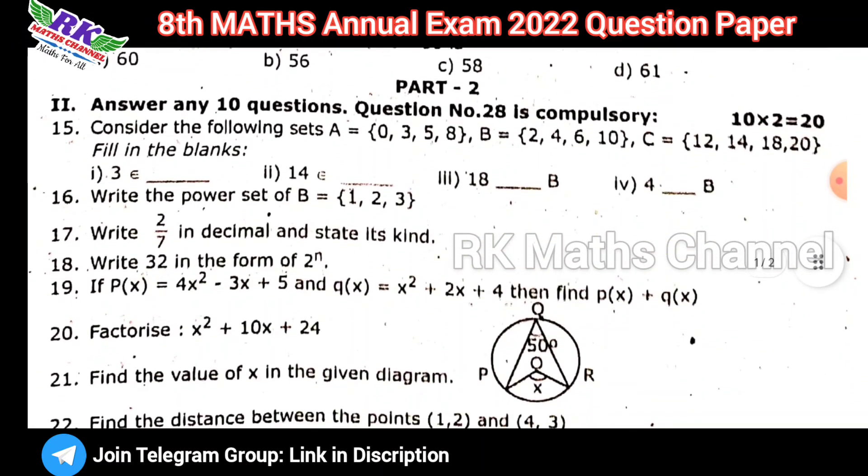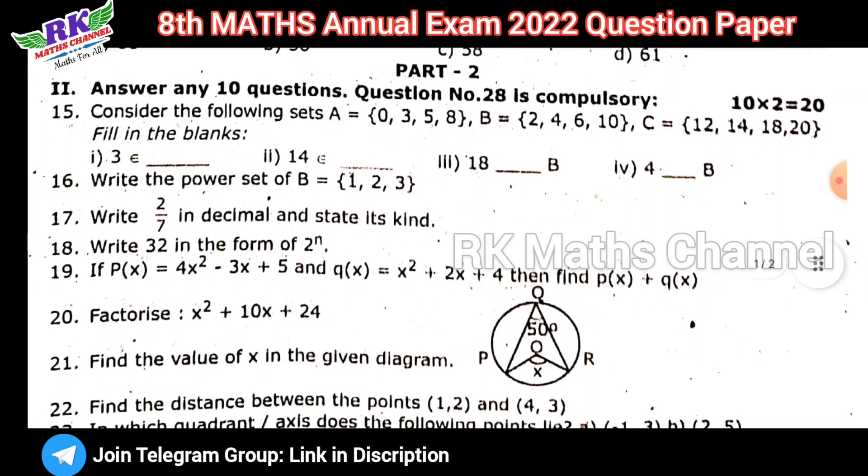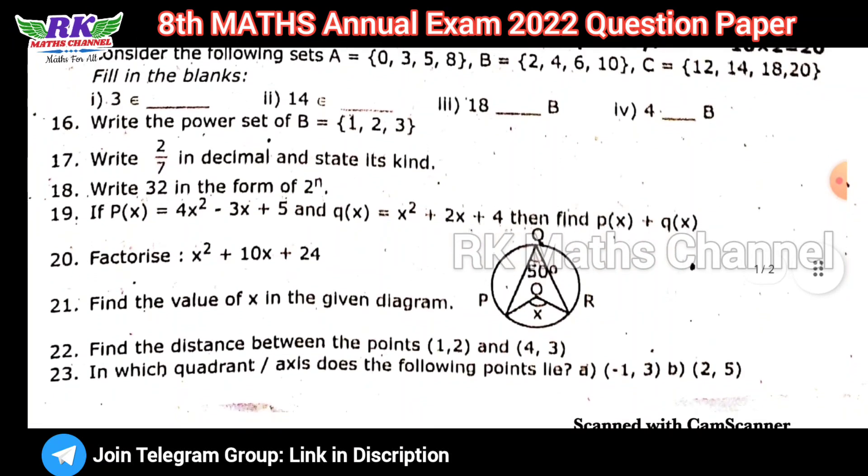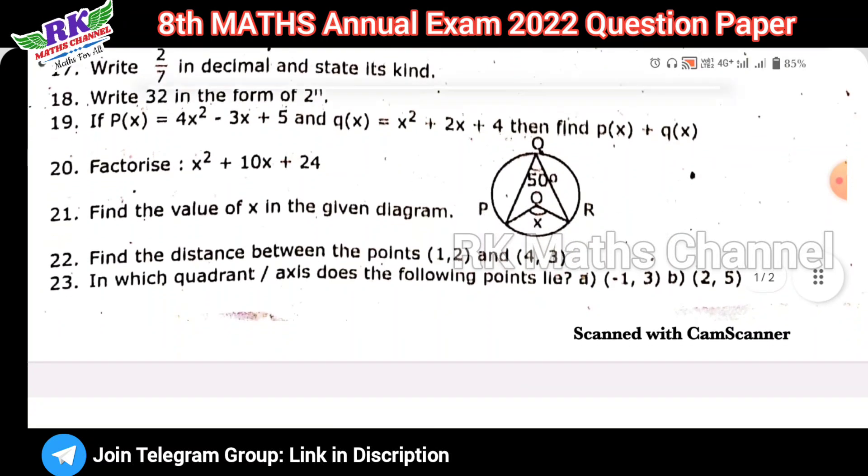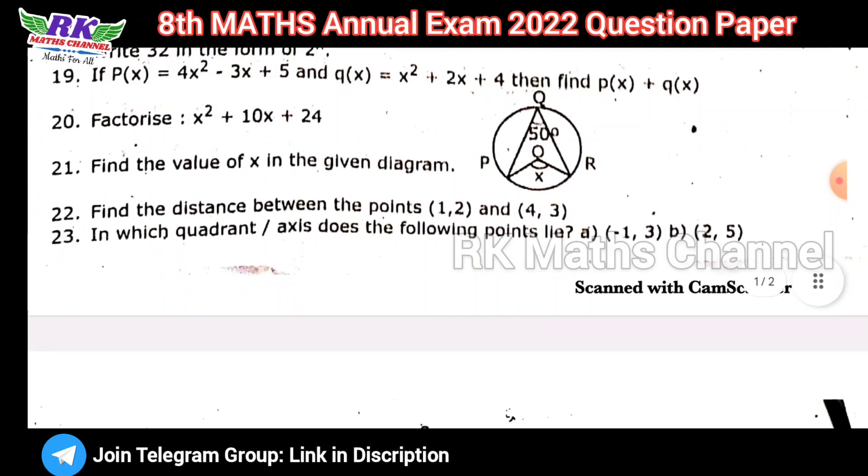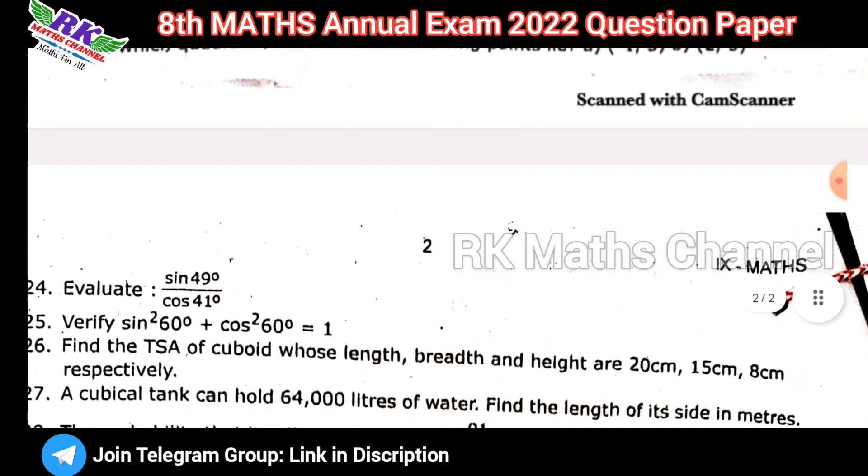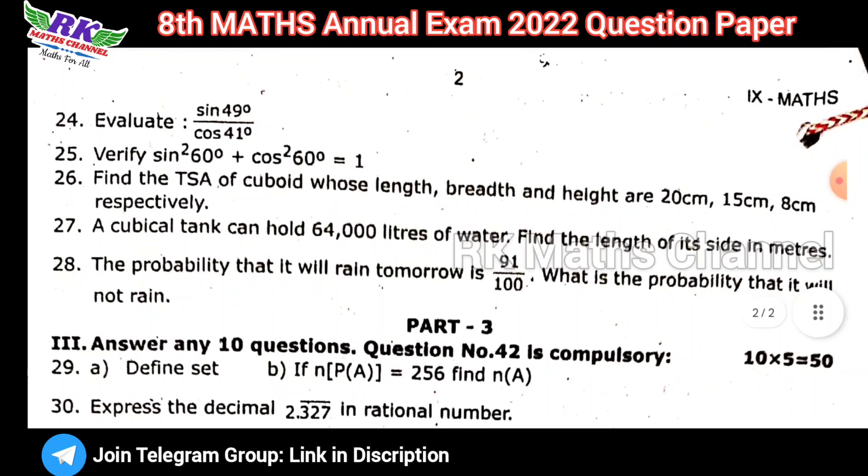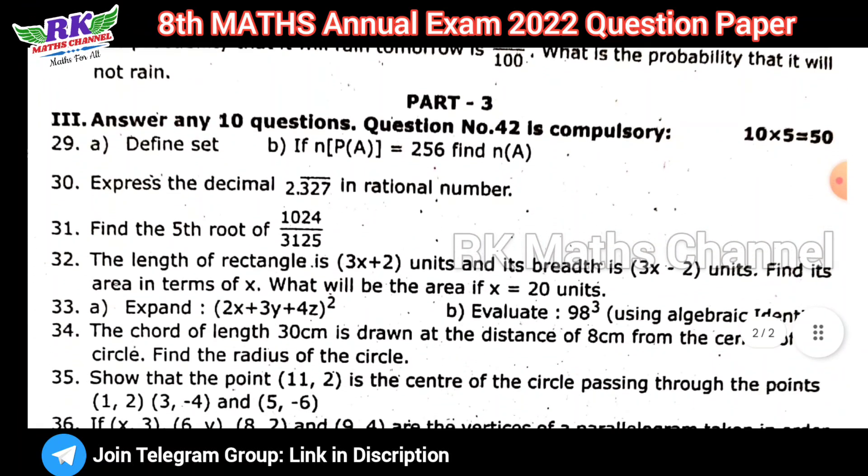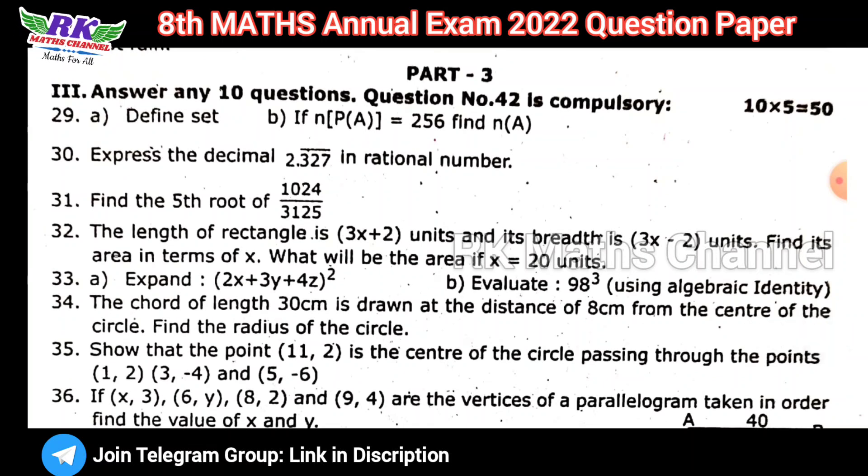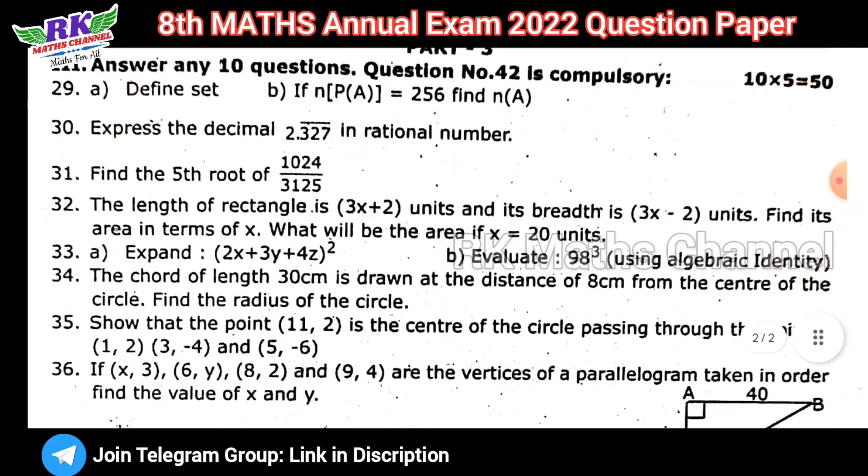14 questions, answer 10 questions. Question number 28 is compulsory. This is the 2022 reduced syllabus question paper. Next, part 3 has 5 marks questions. 14 questions, answer 10 questions. Question number 42 is compulsory.